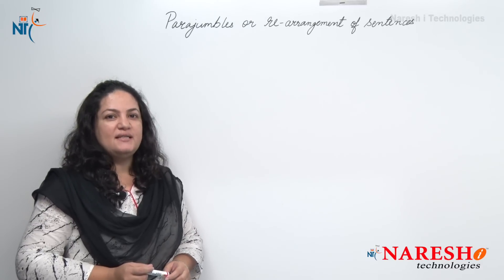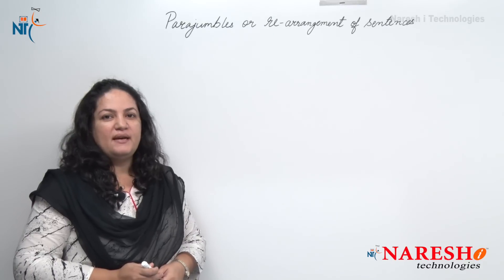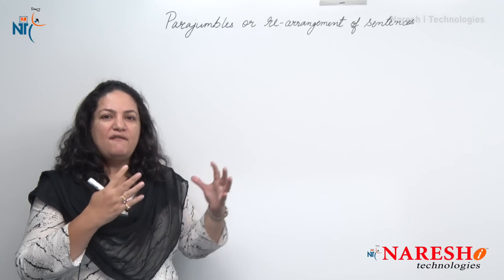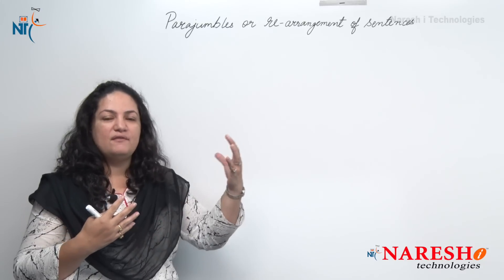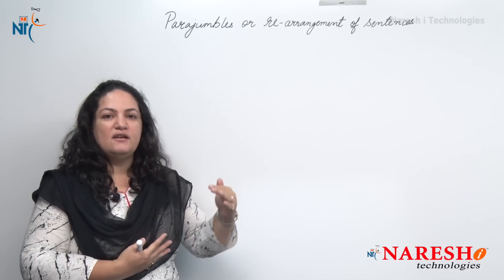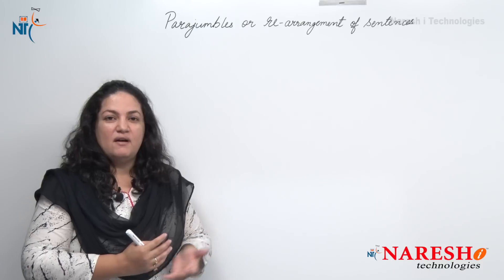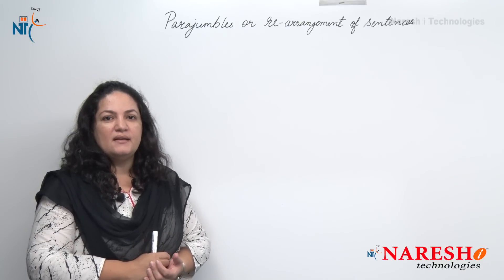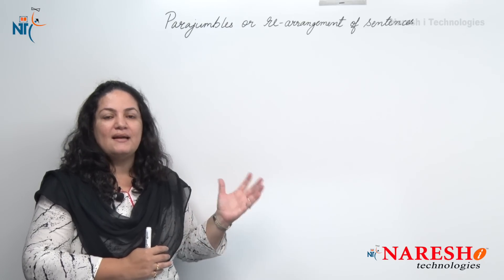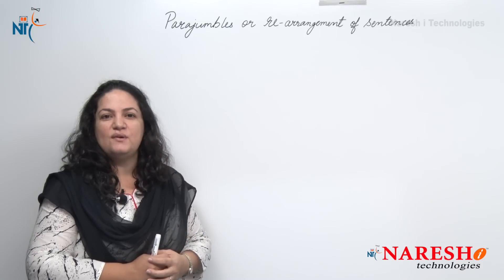Hello everybody, welcome to Naresh IT. Today we are going to have another session on verbal ability, and today's topic is para jumbles or rearrangement of sentences. You have paragraphs or three to four sentences in random order and you have to arrange them in a particular sequence so that it reads like a story. It's a very high scoring section in verbal ability, and you don't have to be a good reader. You just have to understand the sentences, understand the order, apply the logic, and you can crack this section.